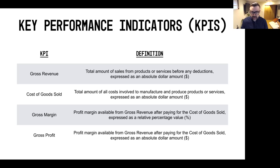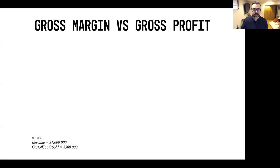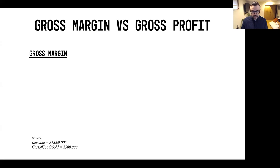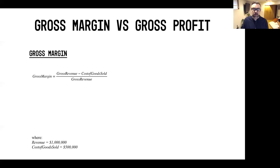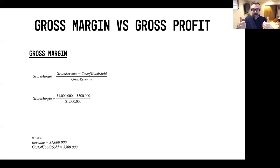The easiest way to illustrate that is through a quick math example. Let's take a retailer that does a million dollars in revenue and it costs them $500,000 in cost of goods sold. The formula for gross margin is: gross revenue minus cost of goods sold, divided by gross revenue. So a million dollars minus $500,000, divided by a million dollars, gives you 50% gross margin.